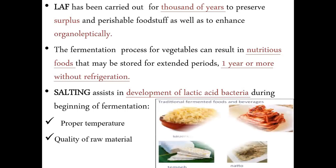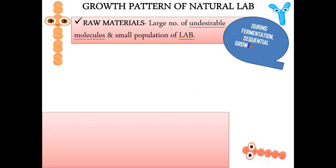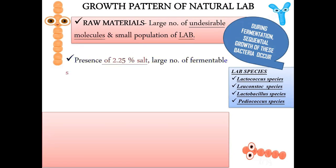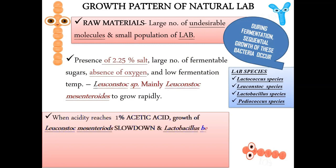Now let's see the growth pattern of natural lactic acid bacteria. The raw material has a large number of undesirable microorganisms and some population of lactic acid bacteria. During fermentation, lactic acid bacteria show sequential growth. Along with the raw material, what is needed is the presence of salt, a large number of fermentable sugars, absence of oxygen, and a low fermentation temperature.